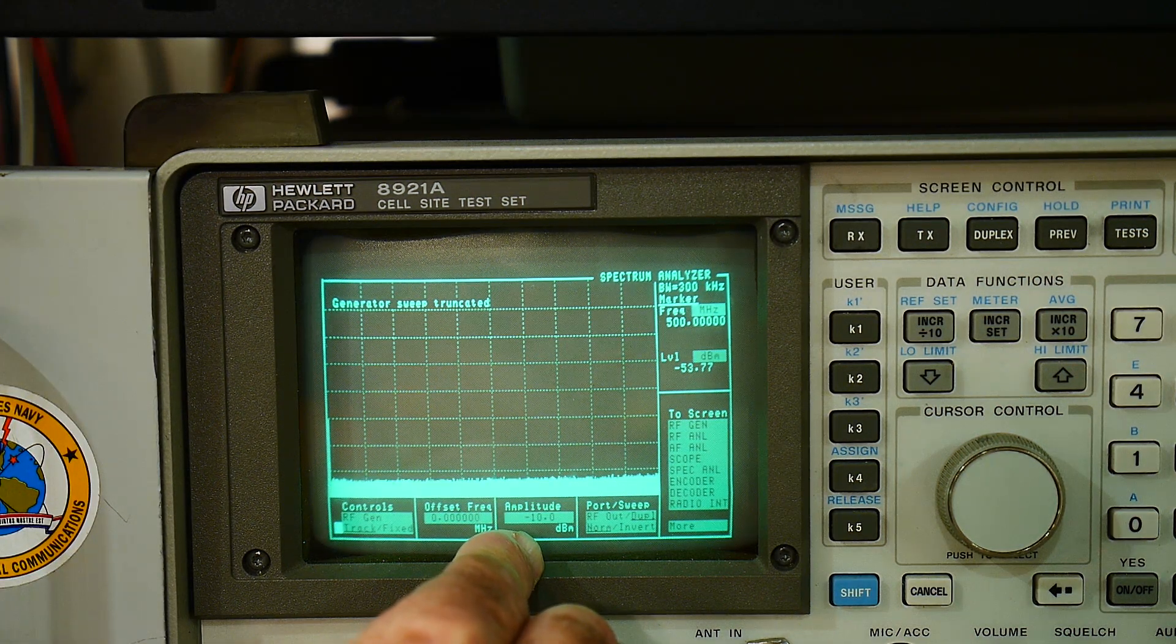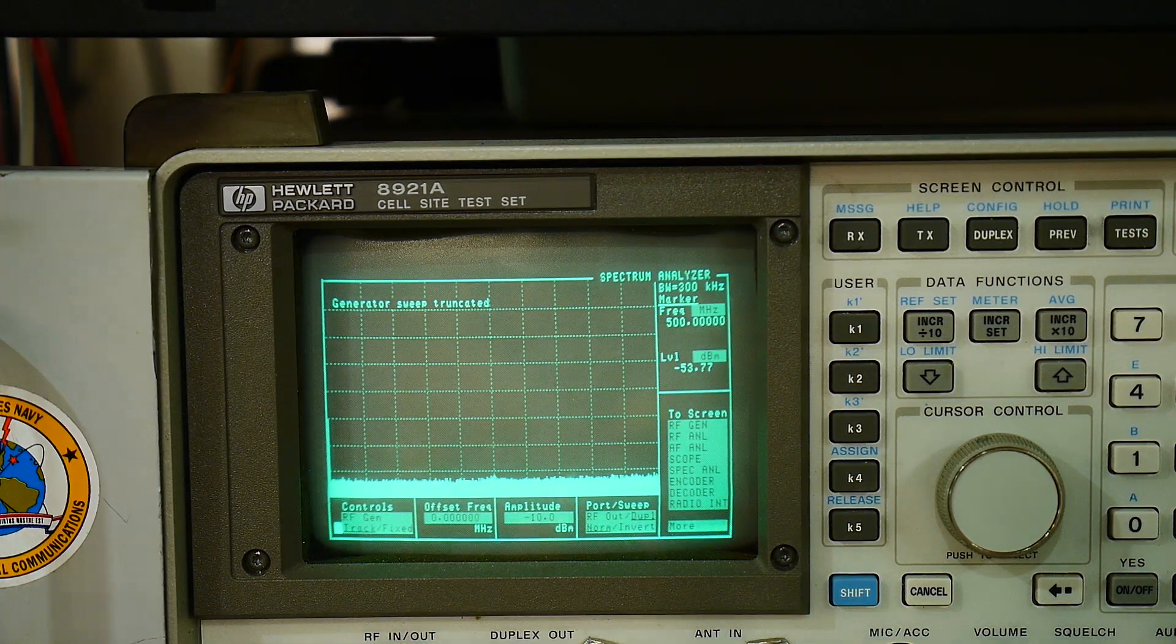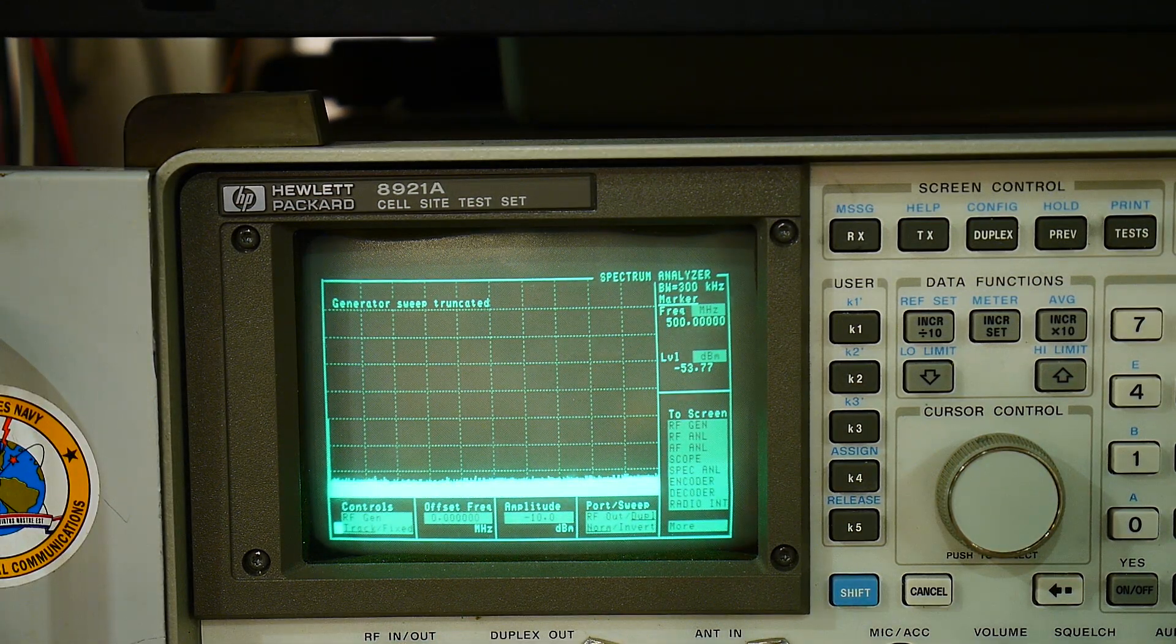Amplitude minus 10 dBm, that's fine. And we want to have it output on the duplex, which is this one, which is fine.